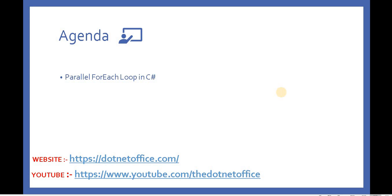Welcome back to parallel programming in C#. In this video we will discuss the Parallel ForEach loop. It is similar to the standard C# ForEach loop, but it works in a multi-threaded, parallel way. Multiple threads perform the Parallel ForEach loop, whereas in the standard ForEach loop only a single thread performs the operation sequentially. This Parallel ForEach loop works similarly to the Parallel For loop.